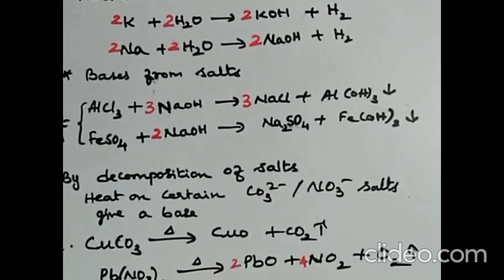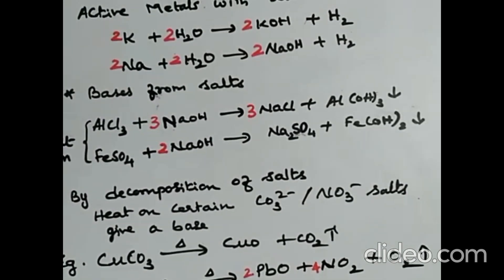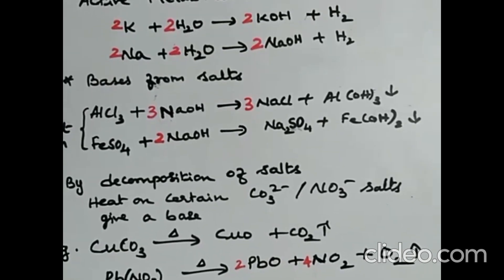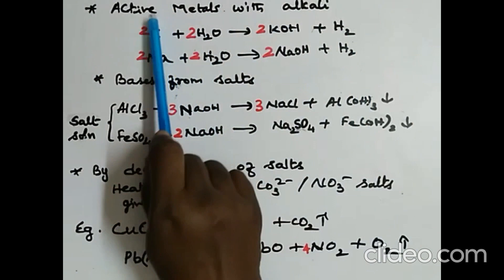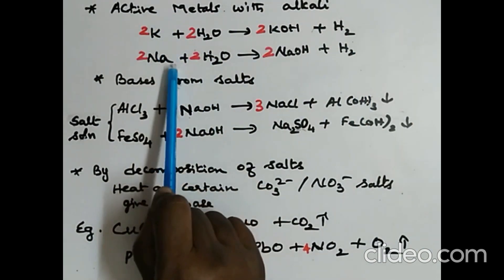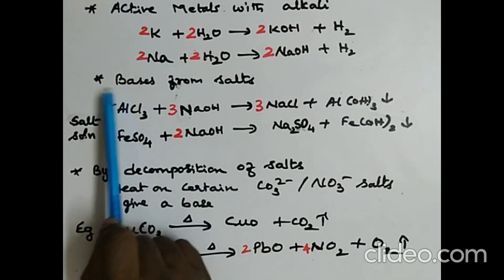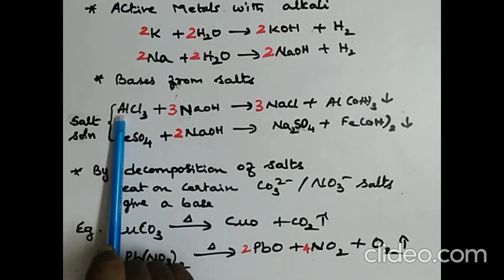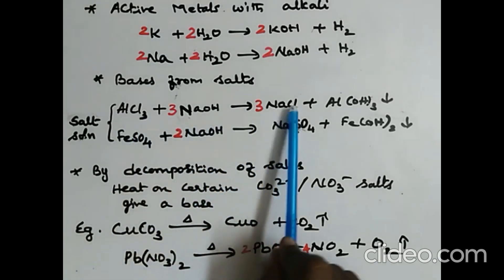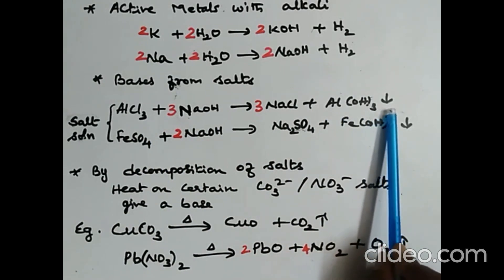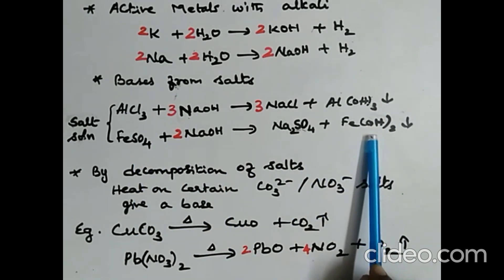The next method is from active metals — metals present above hydrogen in the activity series: potassium, sodium, calcium, magnesium, aluminium, zinc, iron. Potassium or sodium combines with water to form the respective hydroxide with liberation of hydrogen. The next method is preparation from salts: aluminium chloride solution plus sodium hydroxide gives sodium chloride plus aluminium hydroxide, a white precipitate. Ferrous sulfate plus sodium hydroxide gives sodium sulfate and ferric hydroxide, also a precipitate.